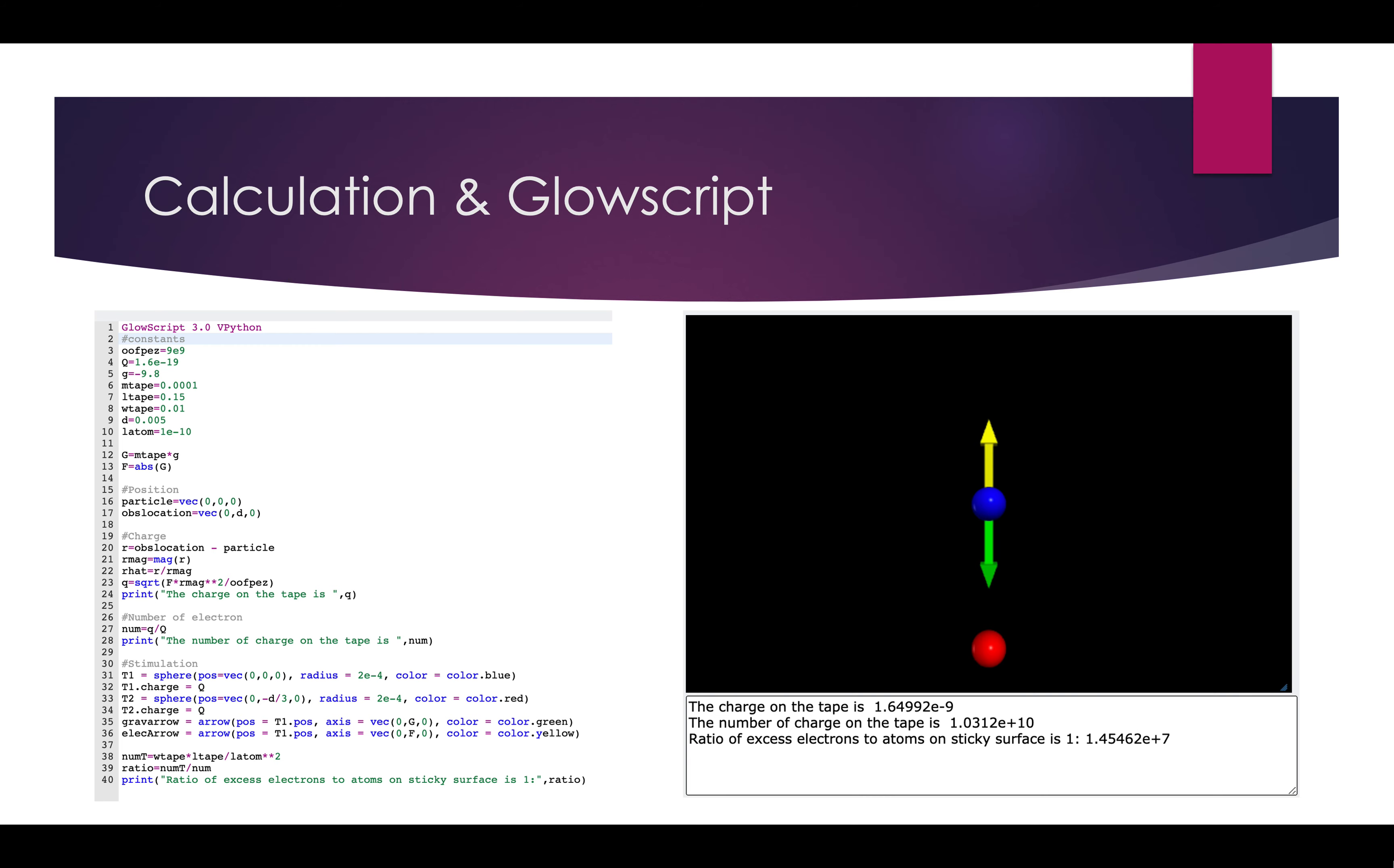And here, we have Q1 and Q2 as both equal to Q. So, Q is equal to the square root of F times R squared divided by K. And then we print that out. And the number of charges, we have Q divided by q. So, we print that out as well. And to show them, we use T1 and T2 so that we can see it on our diagram.